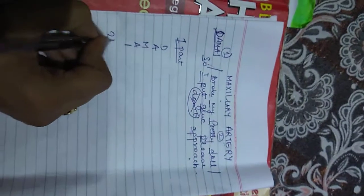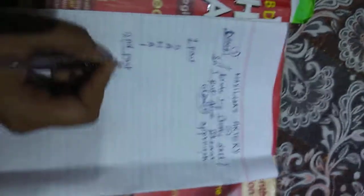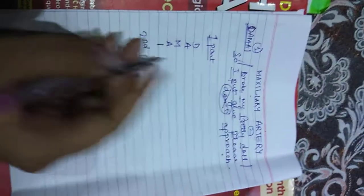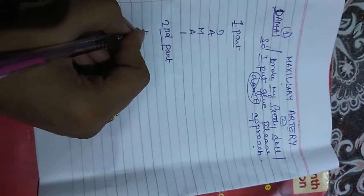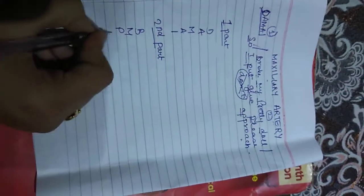In the second part we have four branches: B, M, P, and D. So we'll be writing it here as B, M, P, and D.